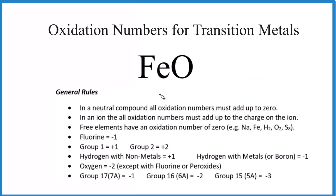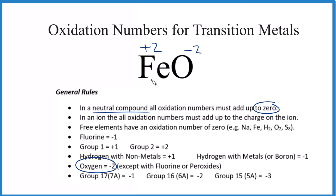Now you try one: find the oxidation number for the iron in this compound. We know oxygen will be negative two, and everything has to add up to zero because it's a neutral compound. So iron has to be plus two. This compound is called iron(II) oxide.